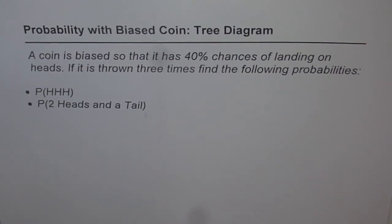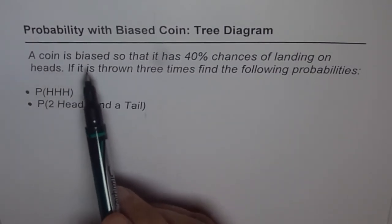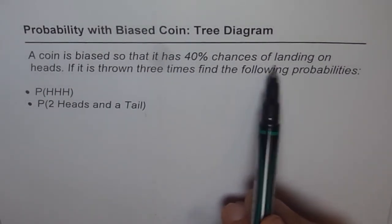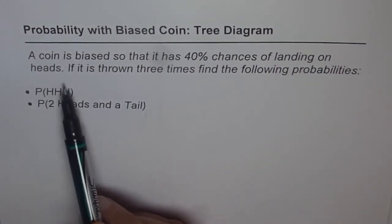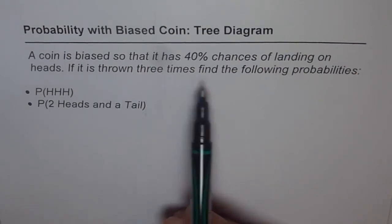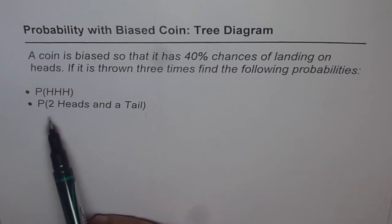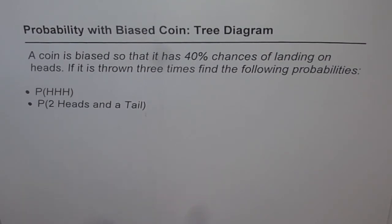Probability with biased coin and tree diagram. We have extended our previous example and this time we are considering a case where we are throwing the coin 3 times — it is again a biased coin. The question is: a coin is biased so that it has 40% chances of landing on heads. If it is thrown 3 times, find the probability of getting 3 heads, or the probability of getting 2 heads and a tail.